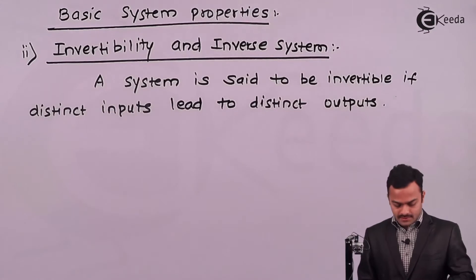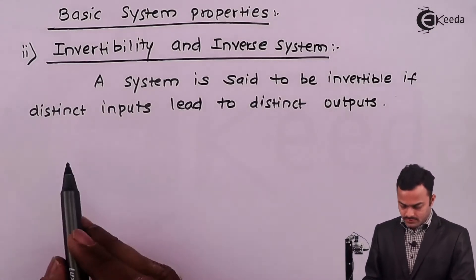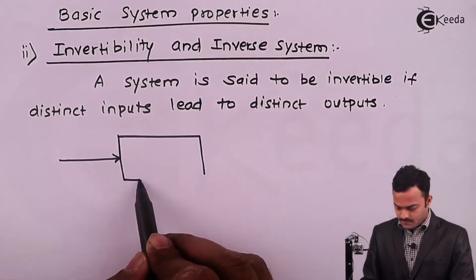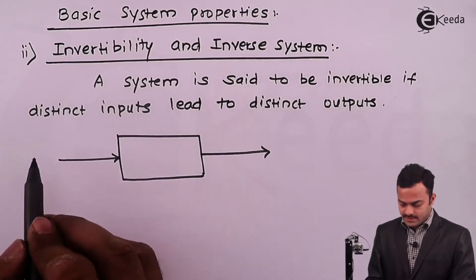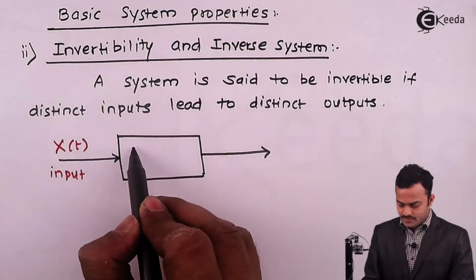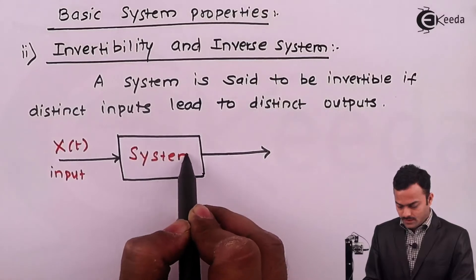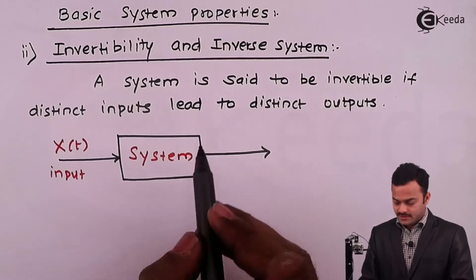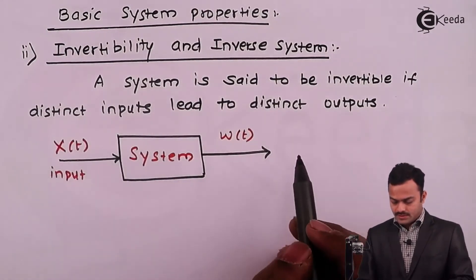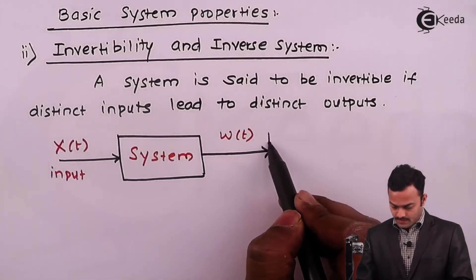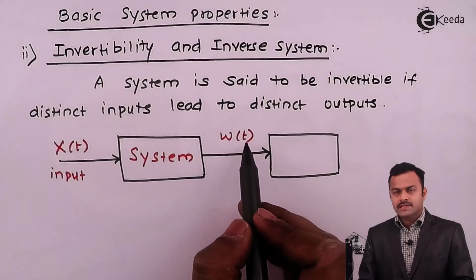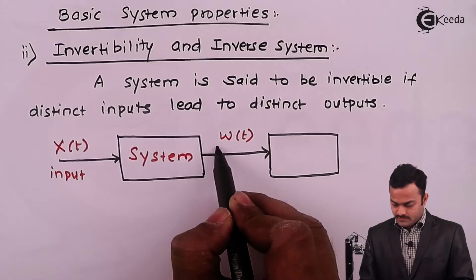What is the meaning of this? Let's represent this diagrammatically. So suppose a signal is there, given to one continuous time system to get an output. Let's consider x input passes through a continuous time system to get output which I will represent as Wt, and this output I am passing through one more system.